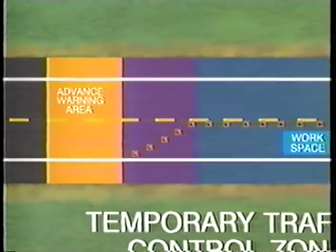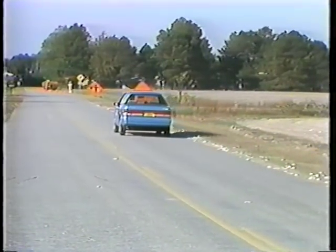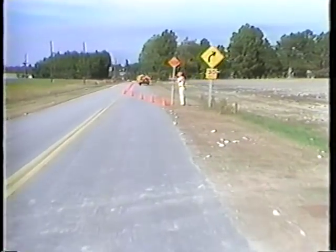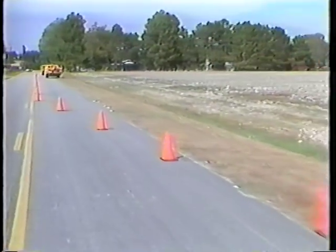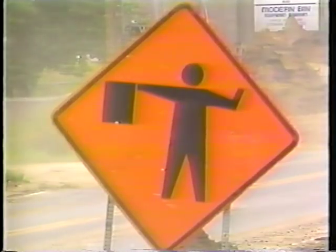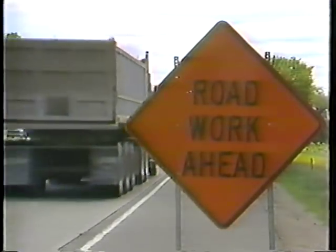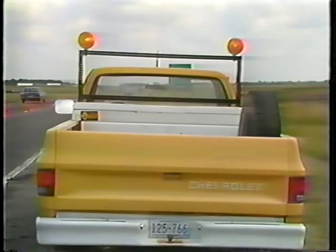The advance warning area prepares drivers and alerts them to what's coming. An advance warning area is necessary for all traffic control zones because drivers need to know what to expect. Before reaching the work area, drivers should have enough time to adjust their driving patterns. In the advance warning area, traffic control zones may vary from a series of signs starting a mile in advance of the work area to a single sign or flashing lights on a vehicle.